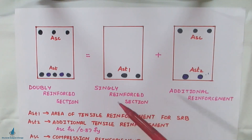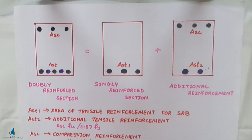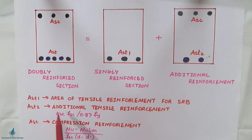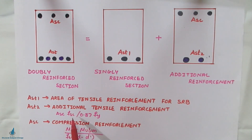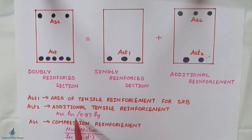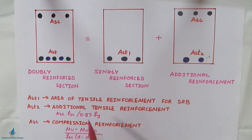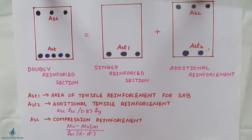Here, ast1 is the area of tension reinforcement for the singly reinforced beam portion. ast2 is the additional tensile reinforcement, which can be calculated using the formula on page 96 of IS 456:2000: asc × fsc divided by 0.87 × fy. asc is the compression reinforcement, with its formula taken from page 97 of IS 456:2000.